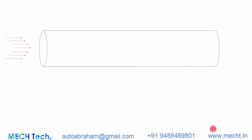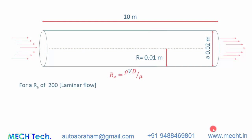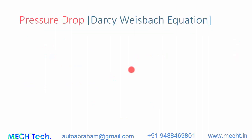Let us take a pipeline where fluid is flowing. The length of the pipeline is 10 meters, the diameter is 0.02 meters, and the radius is 0.01 meters. To calculate the velocity of flow, we take a Reynolds number of 200 to ensure laminar flow. Using the formula Re = ρvd/μ, we get a velocity of 0.01 meters per second.